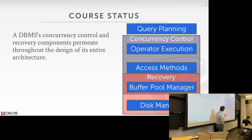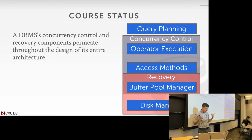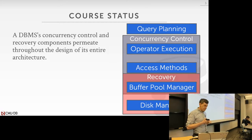These concepts permeate all throughout the entire system. We need to understand the basics first, which is why we went through without discussing them. Now we're going back to see how we modify what we've already talked about to account for concurrency control and recovery. Once we have these two things, you can go off and build your own database system. These are the last two things we need to build a database system that can run transactions correctly and safely.